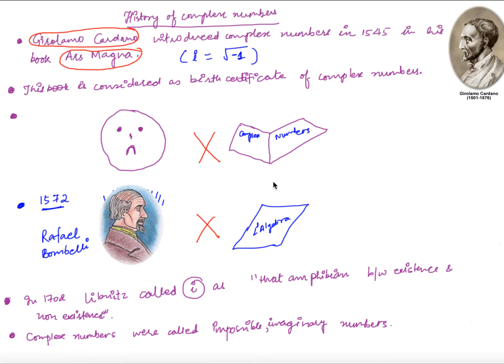It was this fellow Cardano who first encountered the square root of negative numbers in the year 1545, about 450 years back. He saw something like the square root of minus one in his book 'Ars Magna,' where he discussed square roots of negative numbers — what we now call complex numbers. This book is considered the birth certificate of complex numbers.